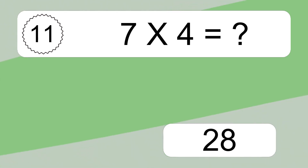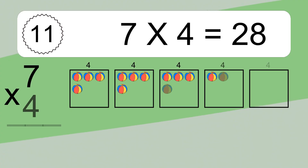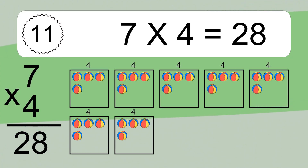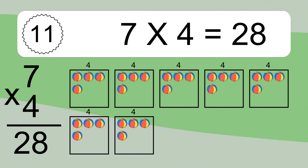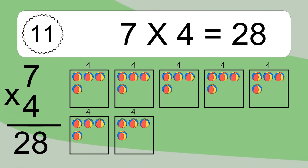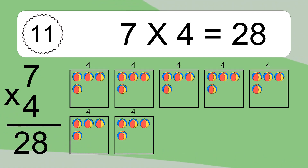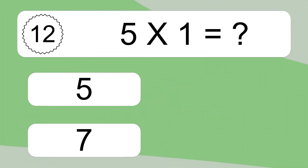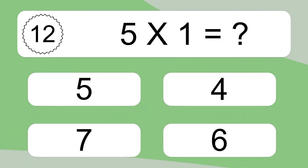7 times 4 equals what? 7 times 4 equals 28. We have 7 boxes and each box has 4 colorful balls inside. If you count all the balls in all the boxes together, you will have 7 times 4 balls. This equals 28 balls. 5 times 1 equals what?